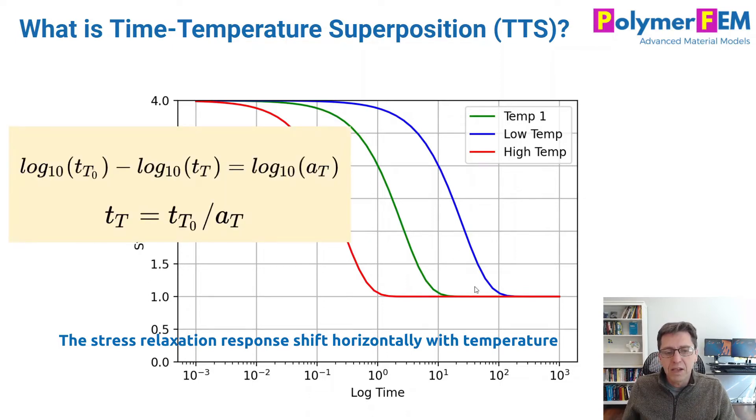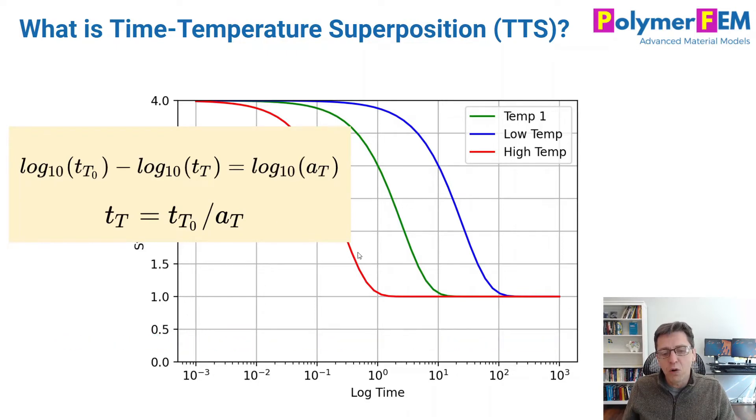And the mathematical equation for this is basically to say that it's a horizontal shift when time is on the logarithmic scale as shown here.